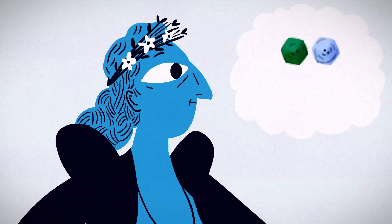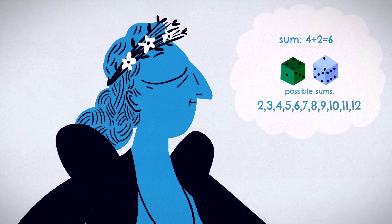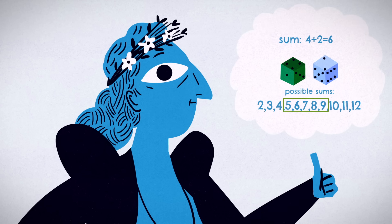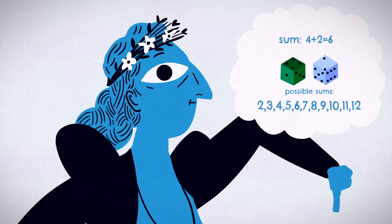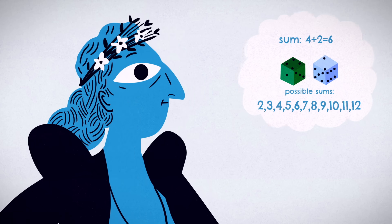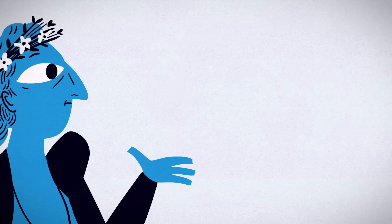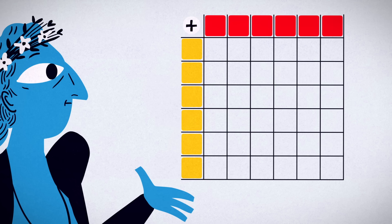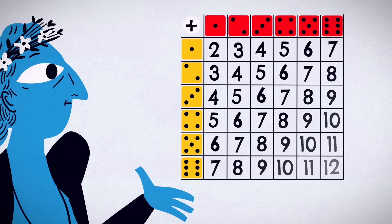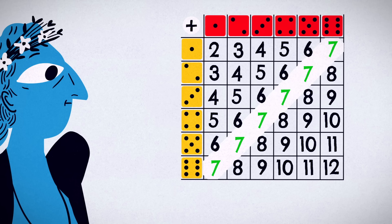Normal dice can roll any sum from two to twelve, but sums in the middle tend to come up more frequently than ones on the ends. We can see the odds of rolling any sum by making a table, with all the possibilities for one die represented on the top, and those for the other on the side. The table lets us see at a glance that there are six ways to roll a seven, but only two ways to roll a three.